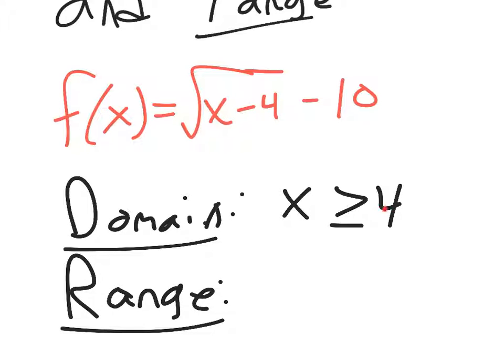Because if you plug in exactly 4, 4 minus 4 makes 0. The square root of 0 is 0. So 0 is as low as this term can go. 0 minus 10 means that the lowest our whole function can go is negative 10.